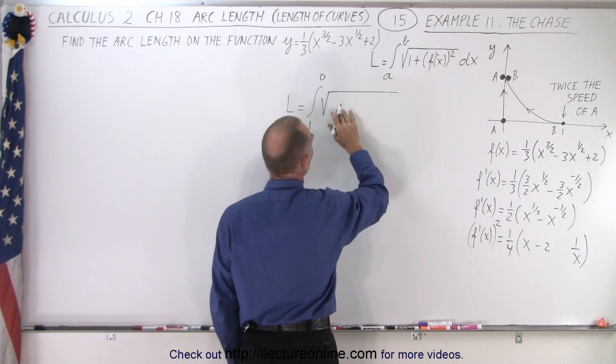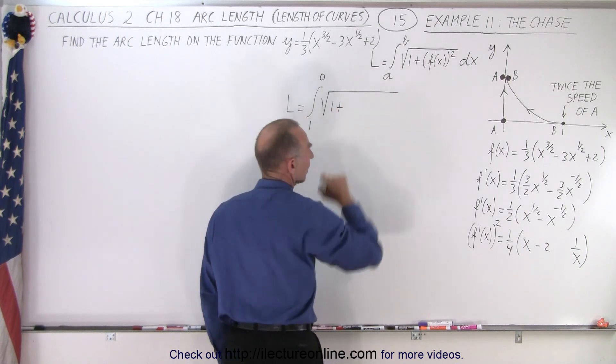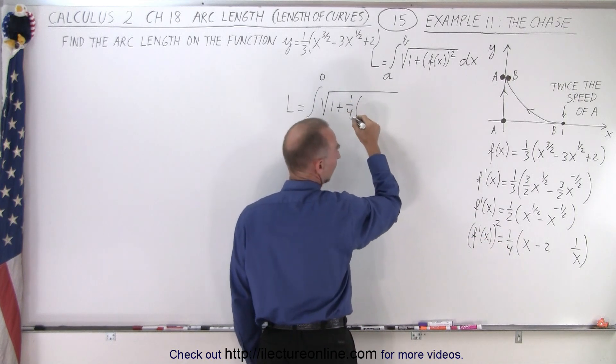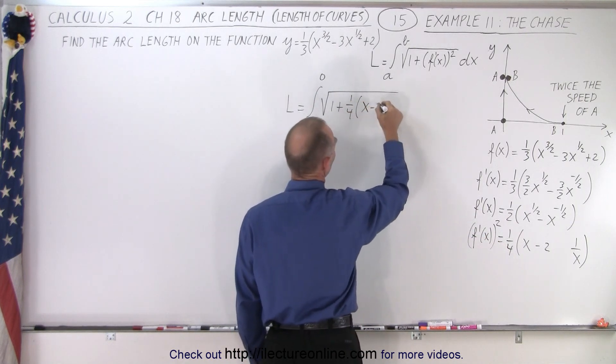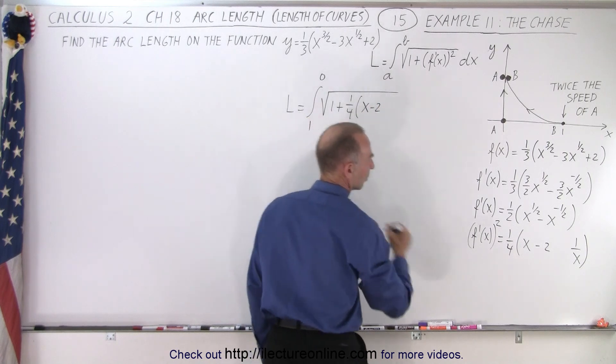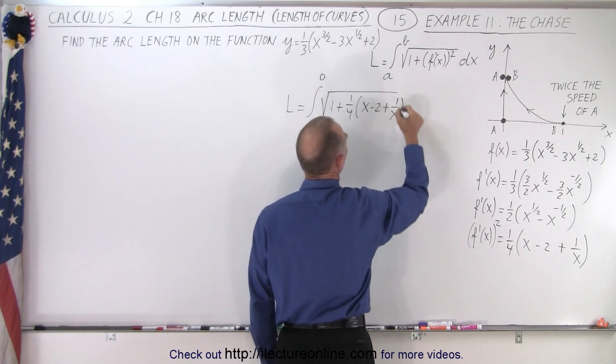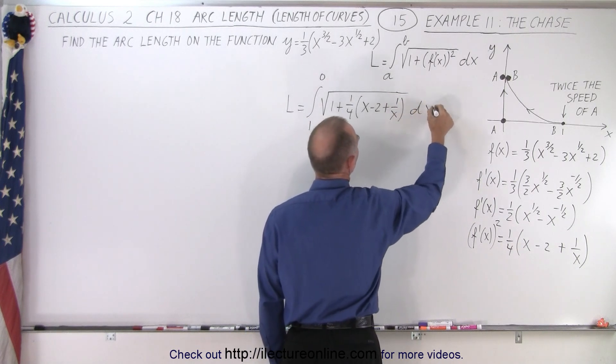And so we integrate the square root of one plus the derivative squared, which is one-quarter times x minus two, did I forget a plus here? Yes, I did. Plus one over x quantity times dx.